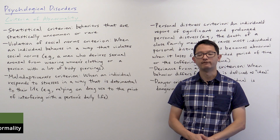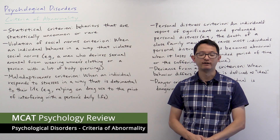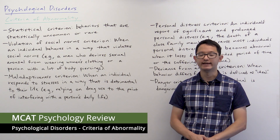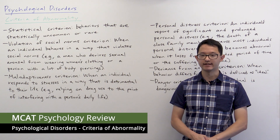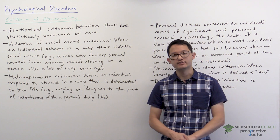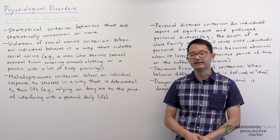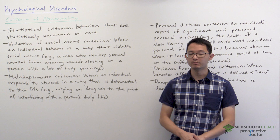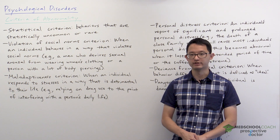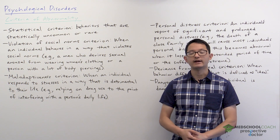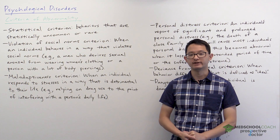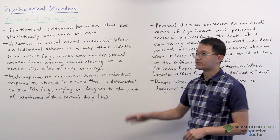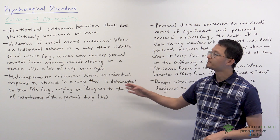In this video we're going to cover the criteria of abnormality in the context of psychological disorders. In order for psychologists to determine if an individual is acting abnormally or has a psychological disorder, there has to be criteria they can follow to determine that.